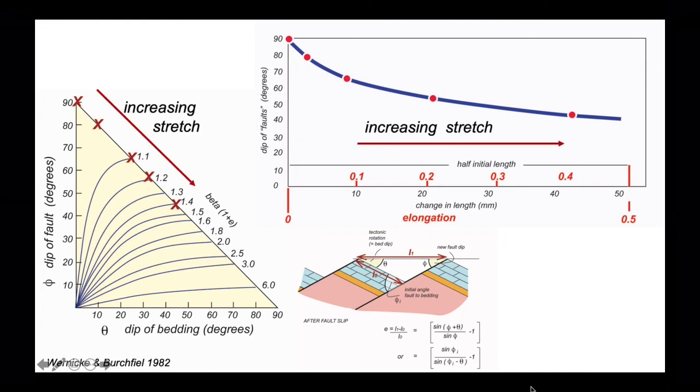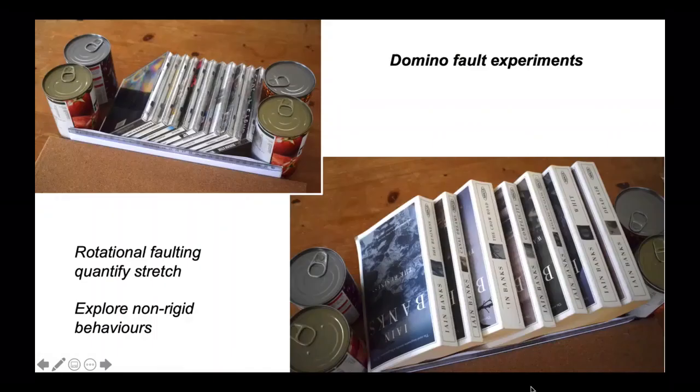With increasing stretch, we increase elongation and we consequently rotate our fault blocks in the manner that we've just seen. These are really neat experiments for showing how fault blocks rotate as stretching increases. We can use the CDs to provide a strictly rigid fault block model. We can use the paperback books to explore non-rigid behaviors.